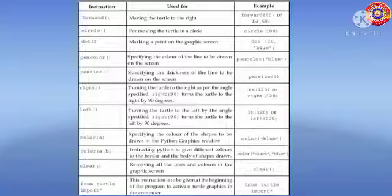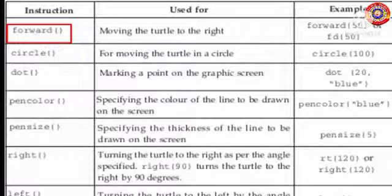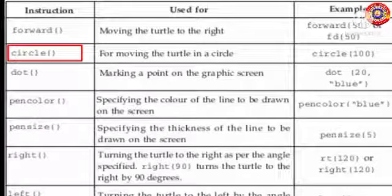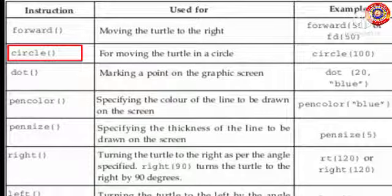Now before starting to create programs, let's have a look at the following instructions and study the uses of all instructions carefully with examples. The first one is 'forward' — it is used to move the turtle to the right. Example: forward(50), or simply you can write fd(50).